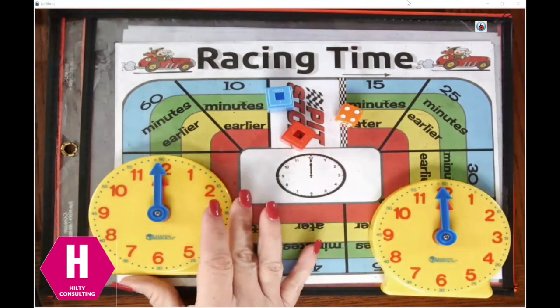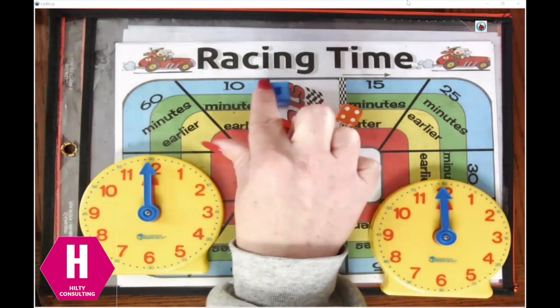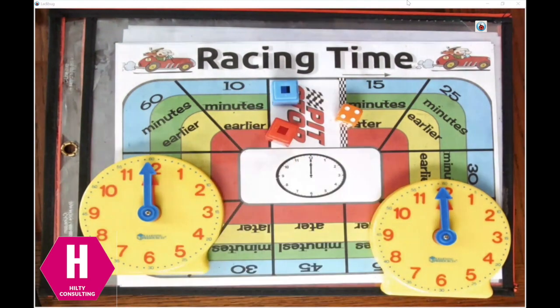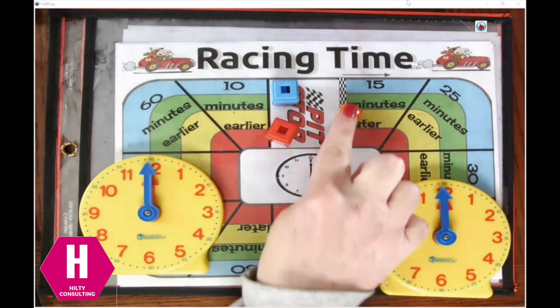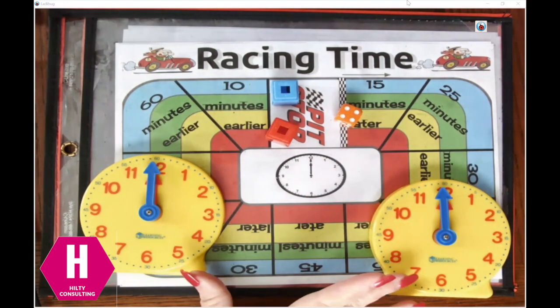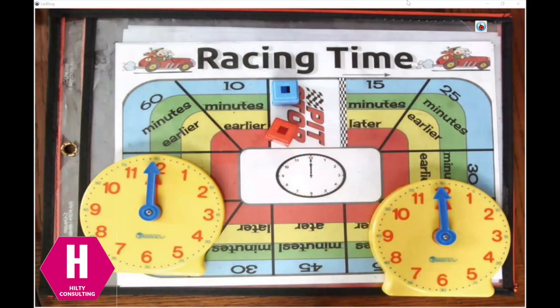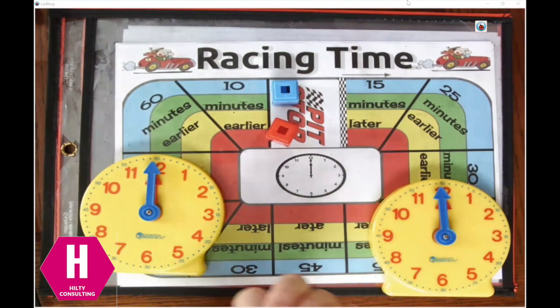Alright, playing Racing Time. These are going to be our race cars. I'm gonna be blue. My friend Brett here is going to be red. You need one die, the game board, and then like I said either the clocks or that recording sheet for the clocks.